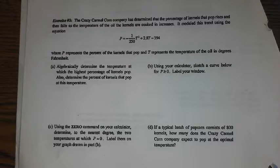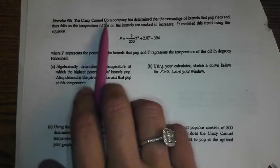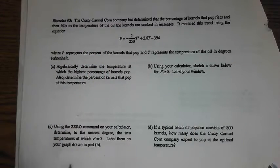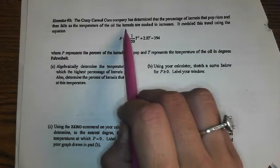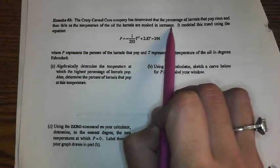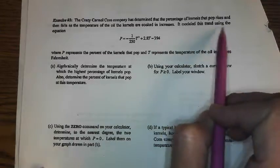Once you see one problem, it's just more of the same. It's all reading and figuring out what they're giving you to plug in where. So on this first example, the Crazy Caramel Corn Company has determined that the percentage of kernels that pop rises and then falls as the temperature of the oil the kernels are cooked in increases. It modeled this trend using the equation.